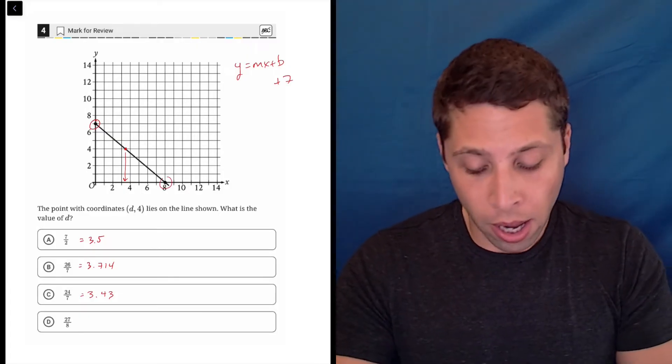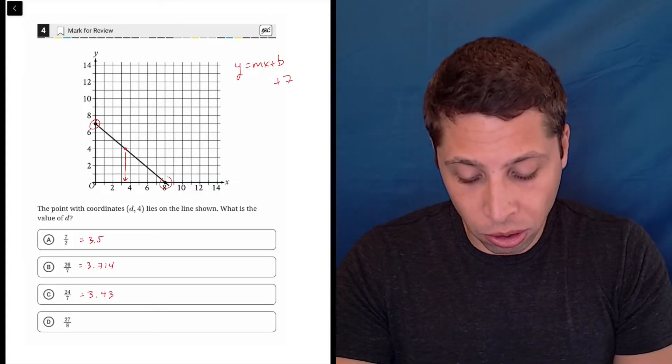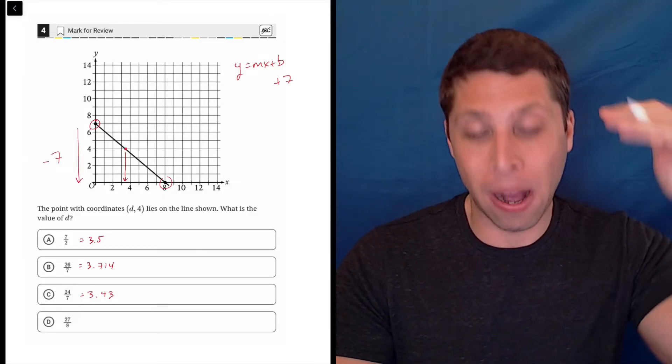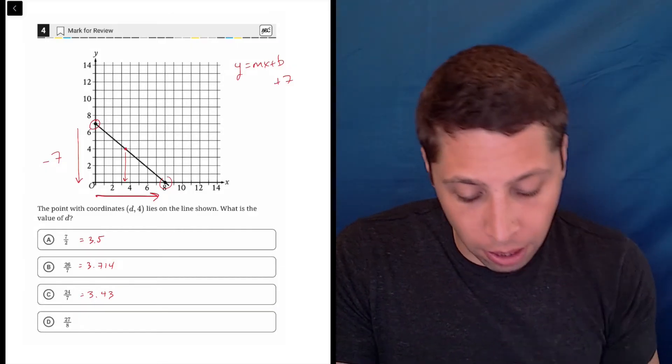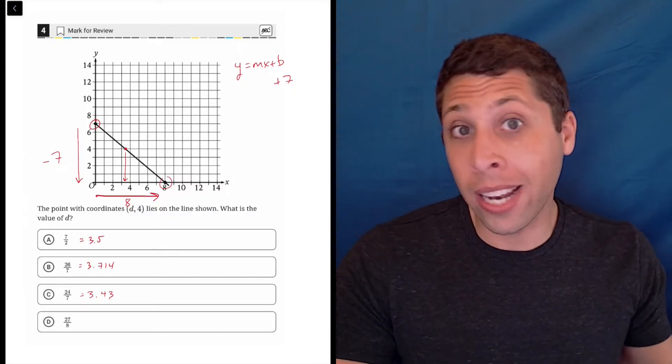I can tell that since there's only two points that are really known for sure, I'm just gonna use those two points. So the slope is going to be down seven, going from positive seven down to the axis is down seven and then a run of plus eight. So I can't reduce that anyway.